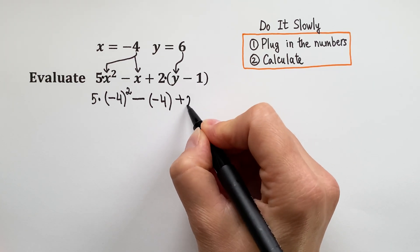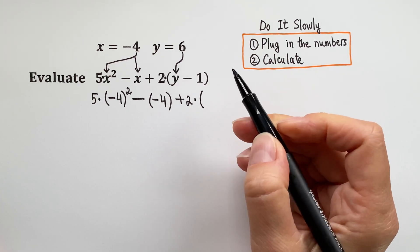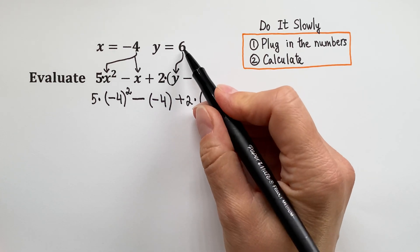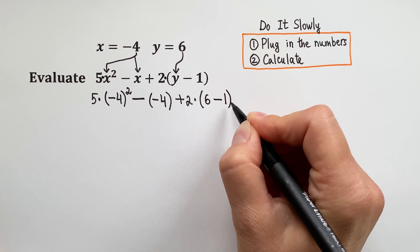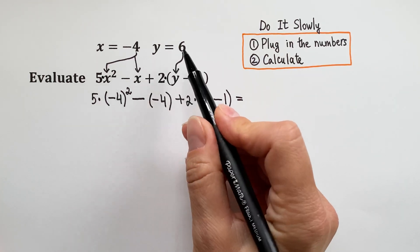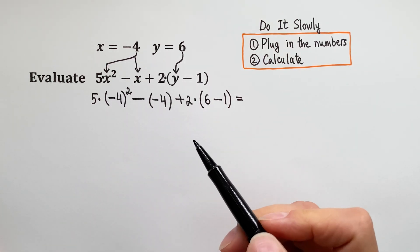Then plus 2 times, and inside the parentheses we have y, so take 6 and put where y is, so 6 minus 1. Very good! So we plugged in our numbers.